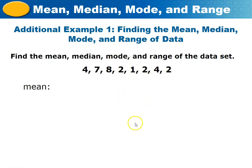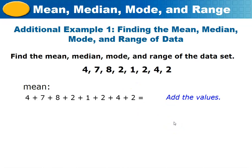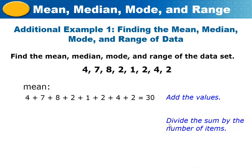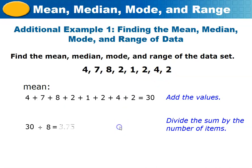To find the mean, add all the values: 4 + 7 + 8 + 2 + 2 + 2 + 4 + 2 = 30. Then divide by the number of data items. We have 8 items, so 30 divided by 8 equals 3.75. Therefore the mean of this data set is 3.75.